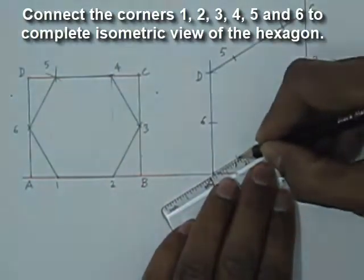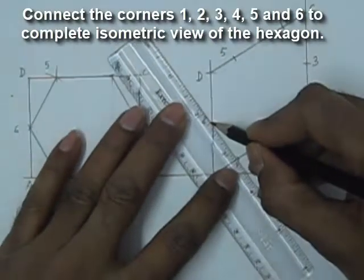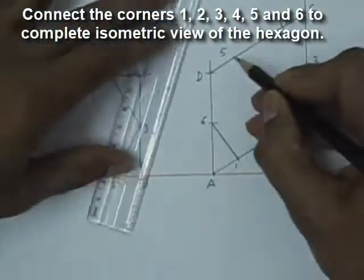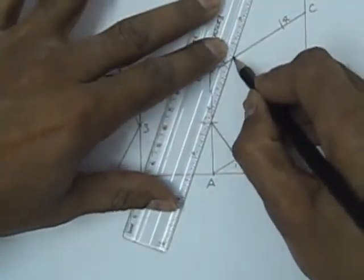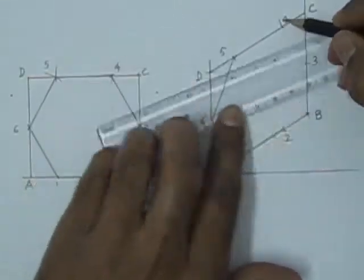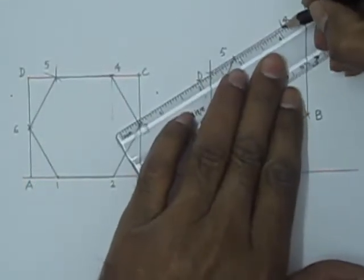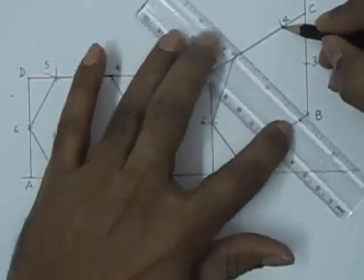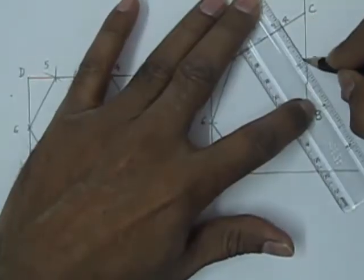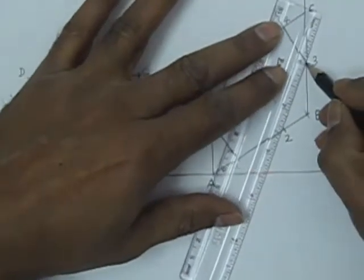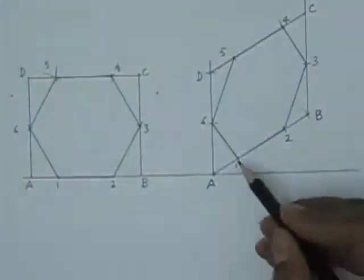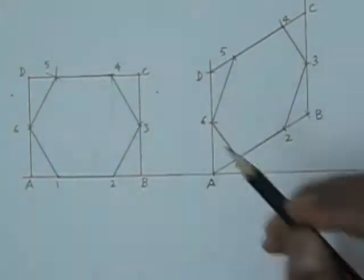Now we will connect these points to form the hexagon in isometric view. And this will represent either the front view or the side view of the hexagon. One, two, three, four, five and six. This is the hexagon in isometric view.